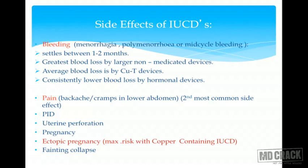Side effects: The most common is bleeding — menorrhagia (heavier periods), polymenorrhea (increased frequency), or mid-cycle intermenstrual bleeding. Usually these complaints are more pronounced in the first two to three months and settle as the body accepts the Copper T. Blood loss is greatest with non-medicated IUCDs; progesterone-containing devices cause consistently lower blood loss.